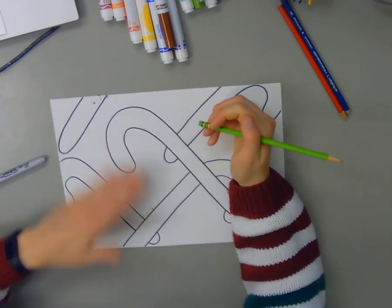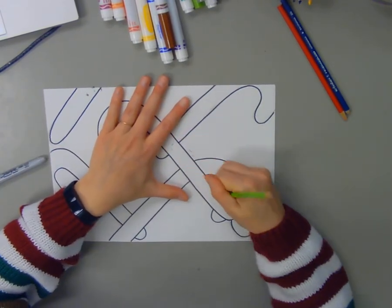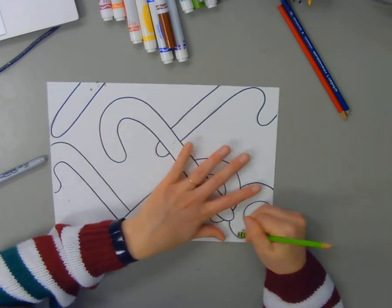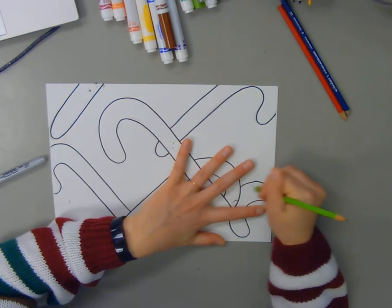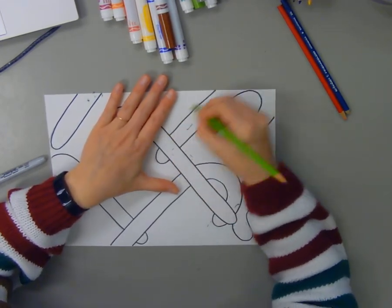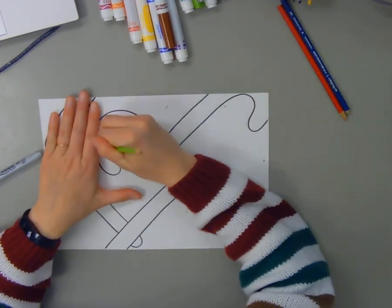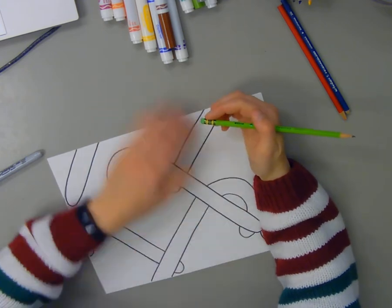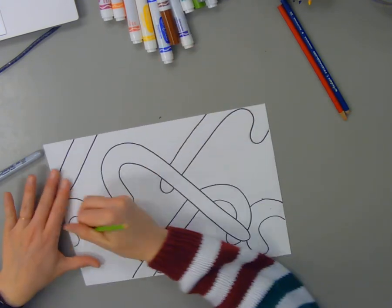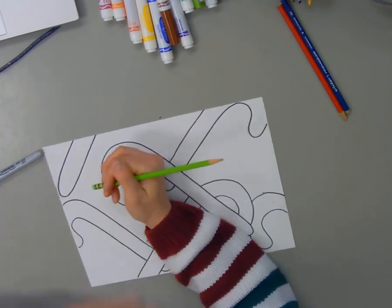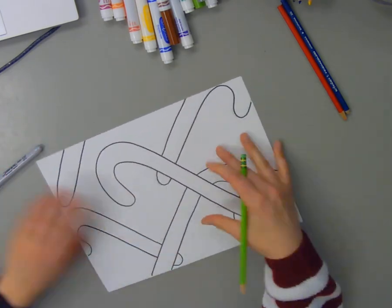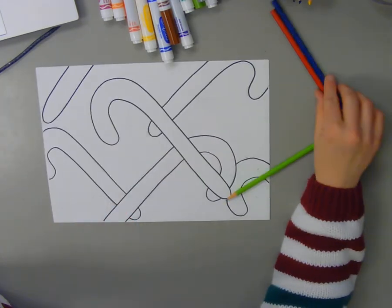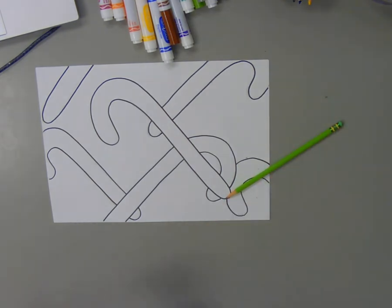Now each candy cane is going to need at least two colors, although you could use as many as you like. But I'll start with the simplest pattern, which would be two colors. And if you are using two colors, you can start with one of them to draw your stripes. If you're using more than two, you'll need to kind of plan out your pattern first so that you can sketch in your stripes before you start.